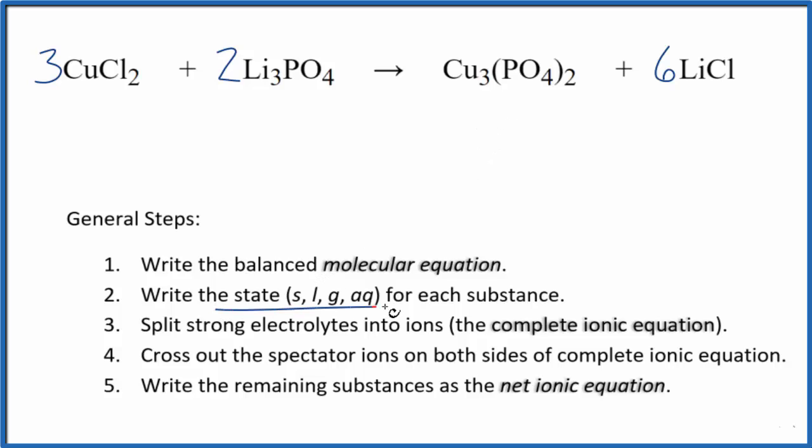Now we can write the state for each substance. Chloride's very soluble. Write AQ, that'll dissolve, dissociate into its ions. Phosphates in general are insoluble except with group one like lithium. This will be aqueous as well.